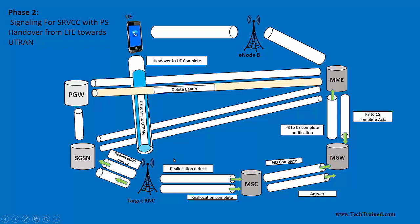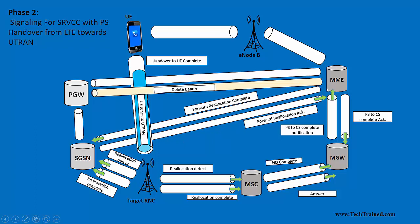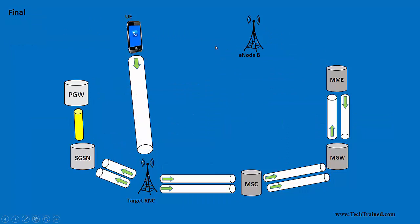For the packet session still running, MME forwards the acknowledgement towards SGSN. The target RNC also informs SGSN that relocation complete has happened. MME forwards the Forward Relocation Complete message towards SGSN, and as a result, SGSN sends a confirmation acknowledgement. Once this acknowledgement is received by MME, it deletes the session. Before deletion, PGW updates the bearers for the packet switch session, then MME deletes the overall session that was going between MME and PGW for the UE, and releases resources, commanding eNodeB to release resources as well.